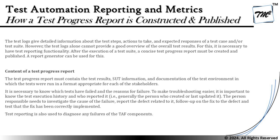Let's look into how exactly we can create or construct a test result report and publish it. The first thing is a quick introduction: test logs give detailed information about the test steps, actions taken, and expected responses of a test case or test suite executed. However, test logs alone cannot provide a good overview of the overall test results. For this, it is necessary to have test reporting functionality. After the execution of a test suite, a concise test report must be created and published. A report generator can be used for this purpose.